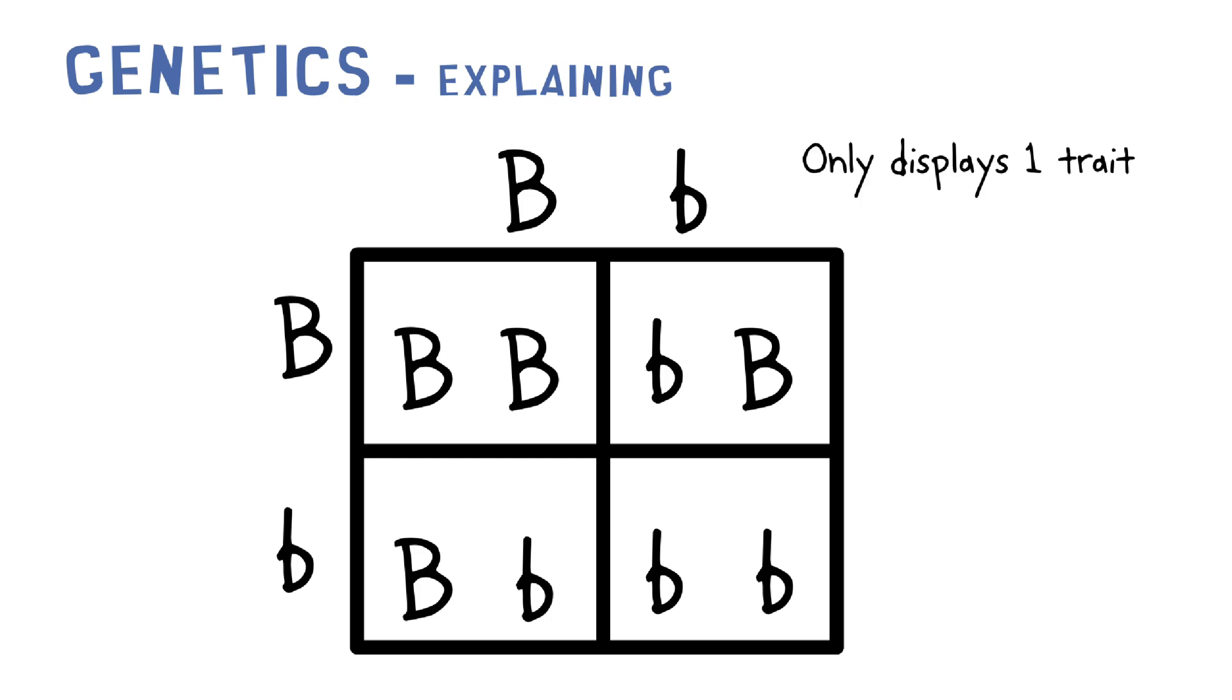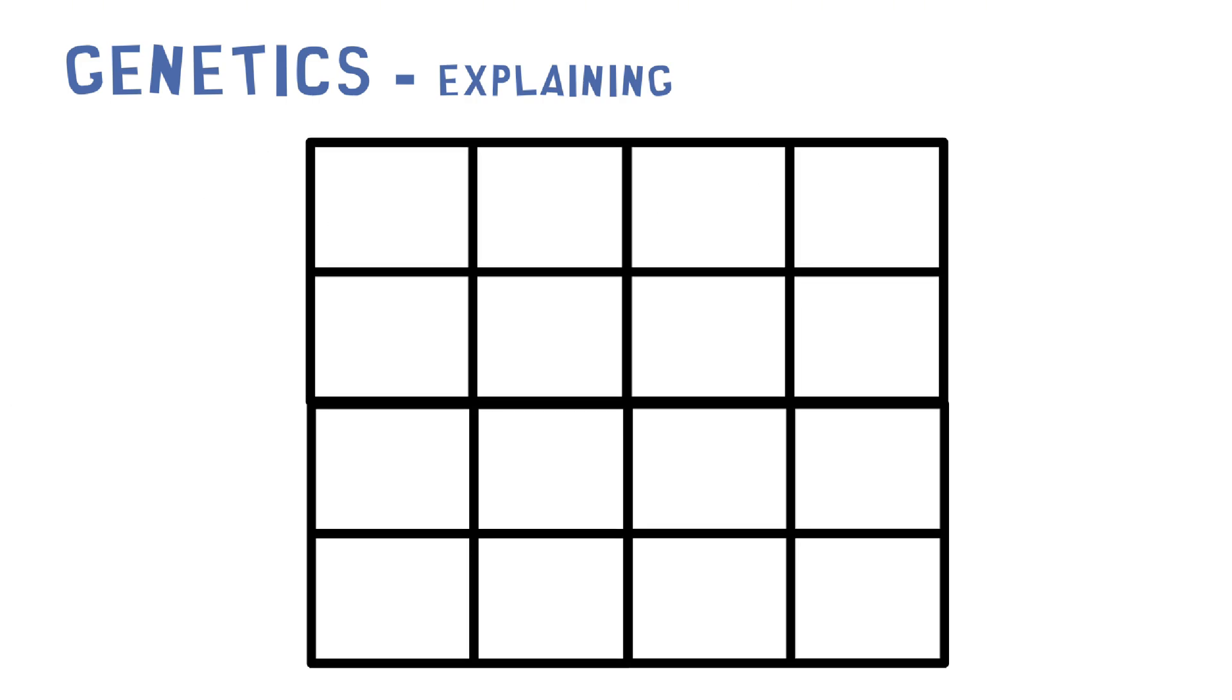It's a two by two grid and it involves one trait, so for example, eye color. Now here's a different Punnett square, a dihybrid.